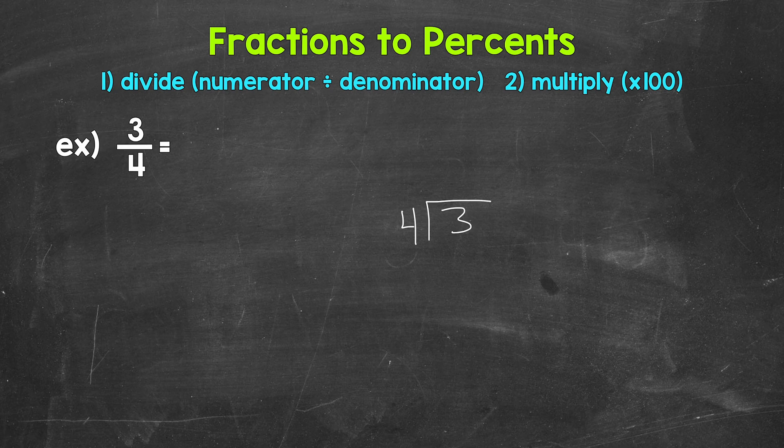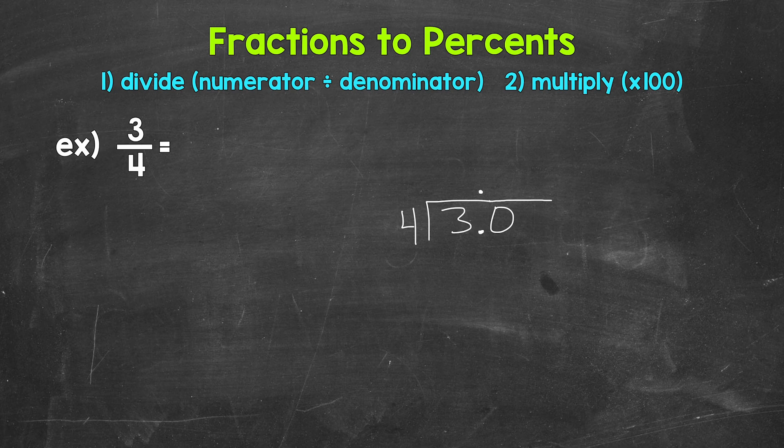So we have 3 divided by 4. How many whole groups of 4 in 3? How many 4's in 3? Well, we can't do that. So we need to use a decimal and a zero in order to work through this problem. Once we have the decimal and the zero, we can bring the decimal straight up into where the quotient, the answer will be. And I'm actually going to extend this division bar here.